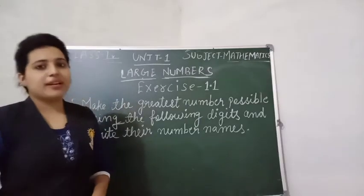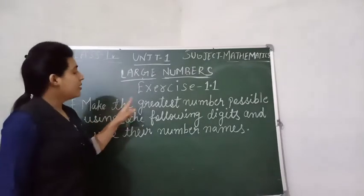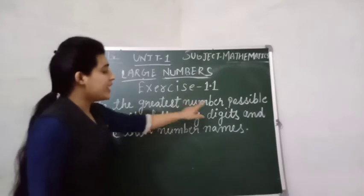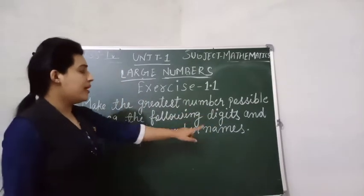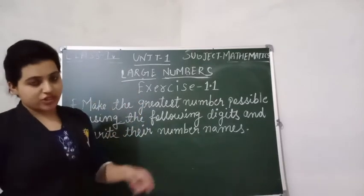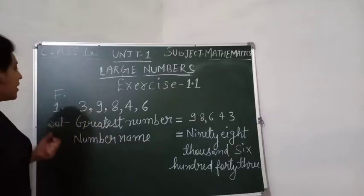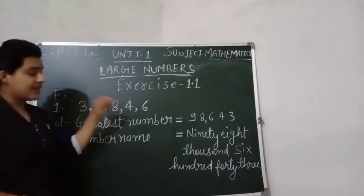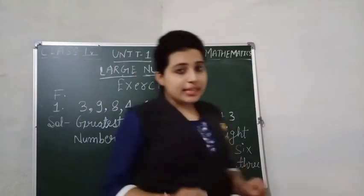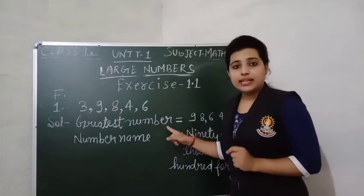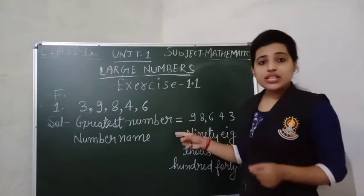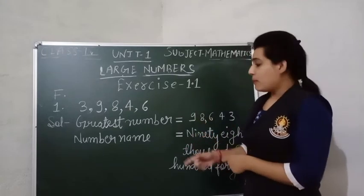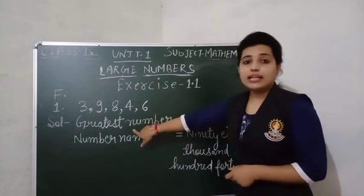Question F: make the greatest number possible using the following digits and write their number name. In question A, we have these five digits: 3, 9, 8, 4, 6. We will use these digits to make the greatest number, so we will arrange them in descending order, greatest to smallest.